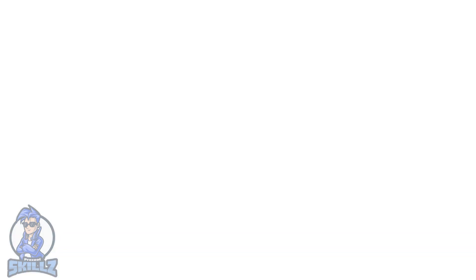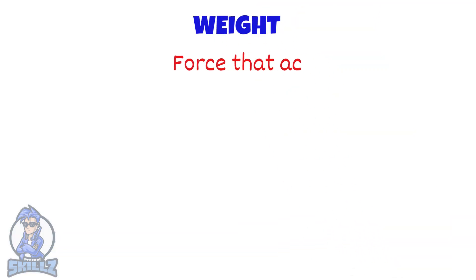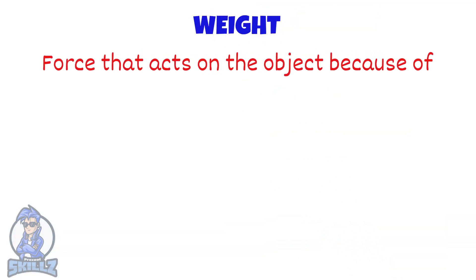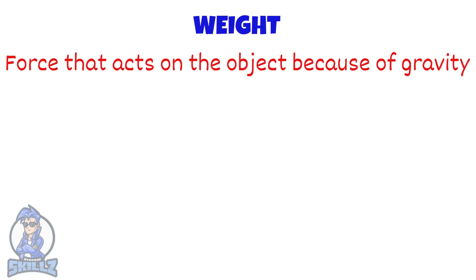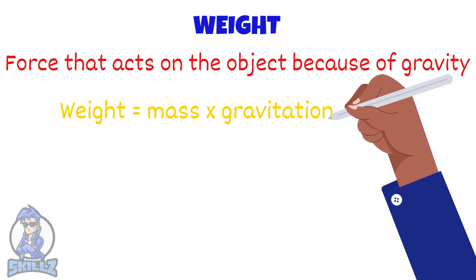And finally, weight is the force that acts on an object because of gravity. This weight depends on the mass and the gravitational force, noted by the equation W equals mg — weight equals mass into gravitational force.